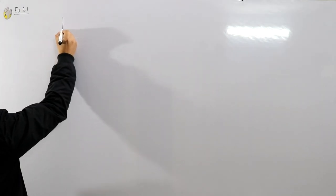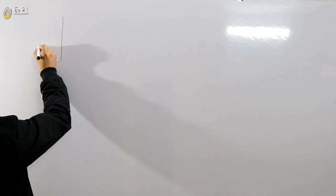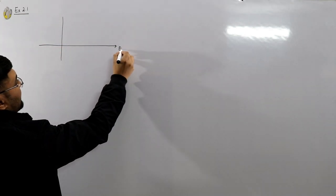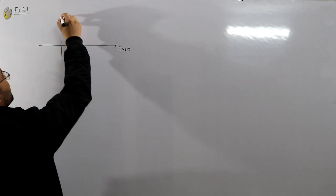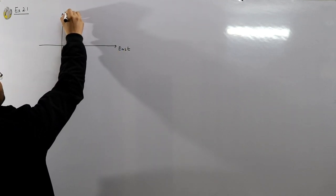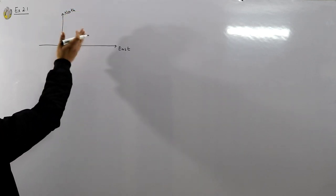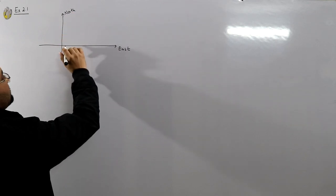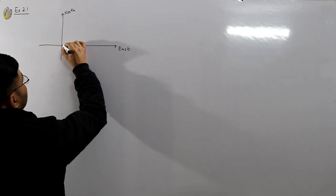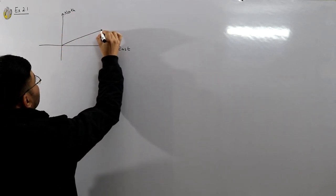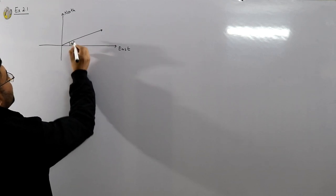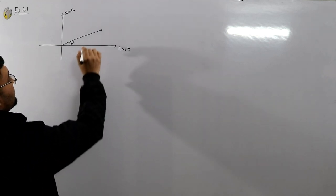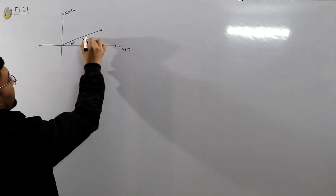First, if you create an x-y coordinate system, the right side is east and the upward direction is north. So 30 degrees north of east means the angle from east toward north is 30 degrees. This vector represents 200 kilometers.